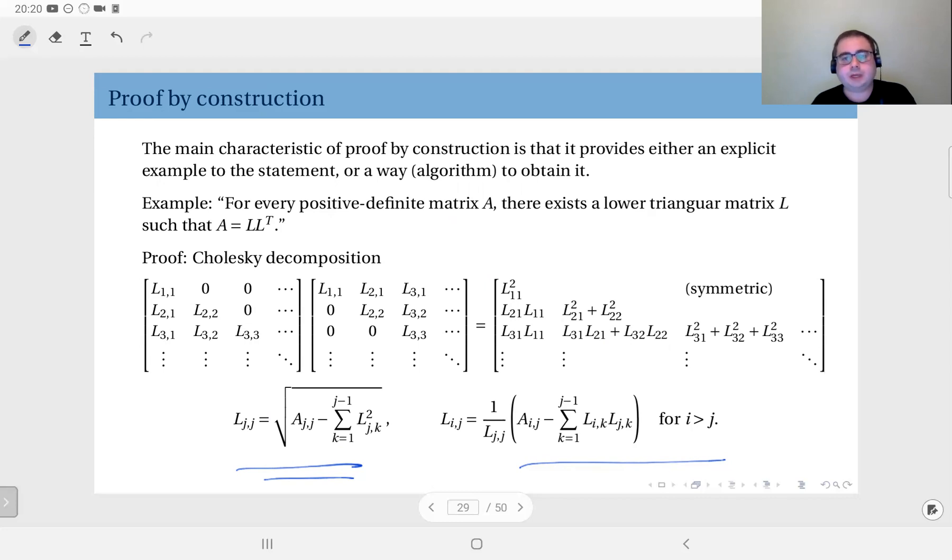So this is in fact also a proof by construction example, because again this is an existence theorem. This proof doesn't just prove that it somehow exists—it gives you a way to actually compute that matrix L, so that when you compute it you can just verify A in fact equals L times L transpose. Therefore, it actually exists.